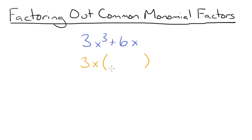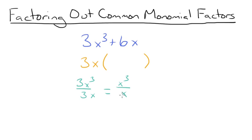To figure out what goes in the parentheses, we need to divide each term by 3x. So we're going to start by dividing 3x cubed by 3x. That will give us x cubed over x when we divide the 3's by each other. Using our exponent rules, we know that x cubed divided by x is equal to x to the 3 minus 1, which is equal to x squared.